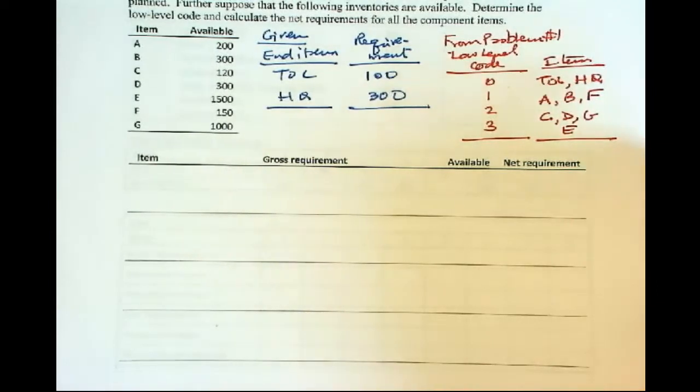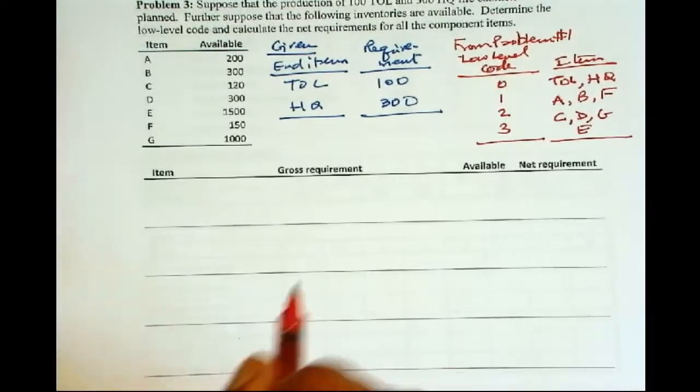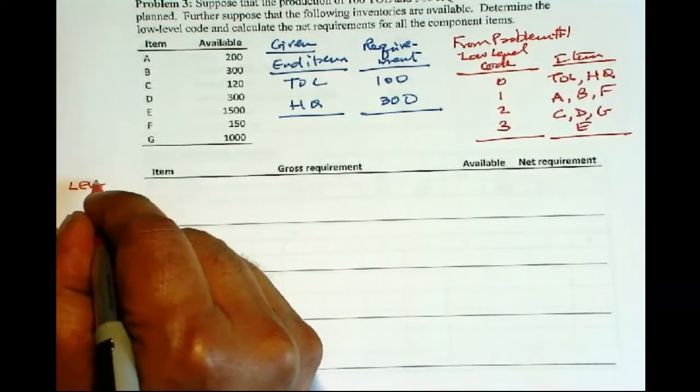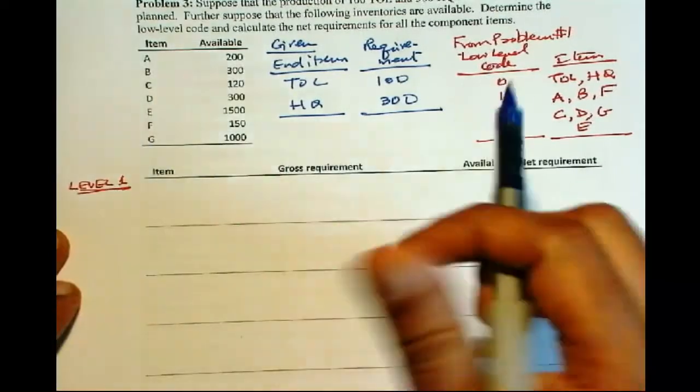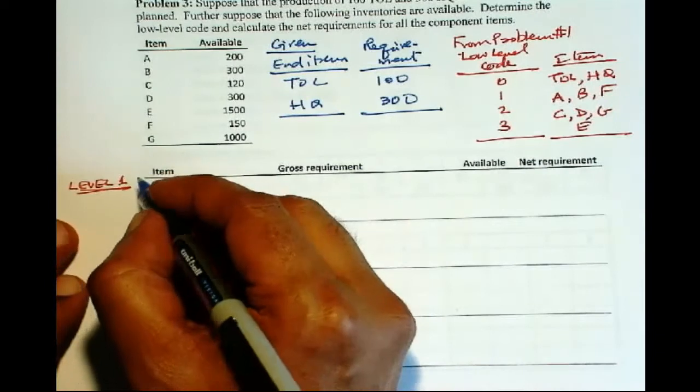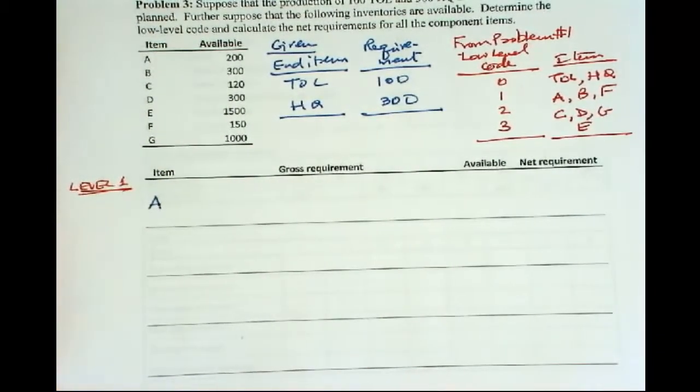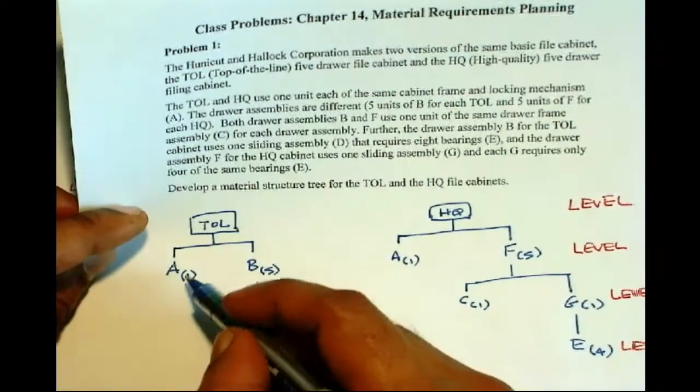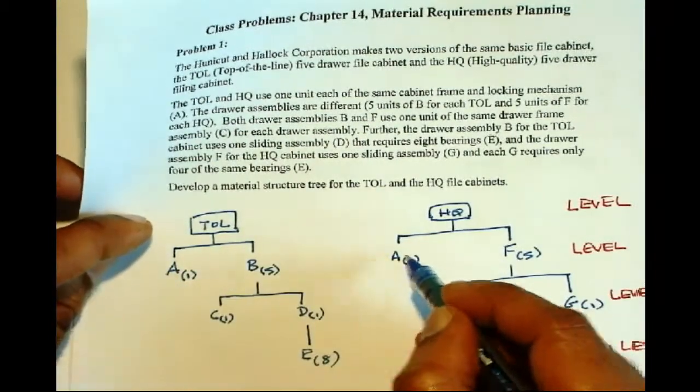So let us start with level 1 items. And within a given level, it does not matter which order. You can do it in any order you want. So we will start with A. Now we have to use the bill of materials. That is what tells us how many units are needed for each of the parents. So A appears in two different places.